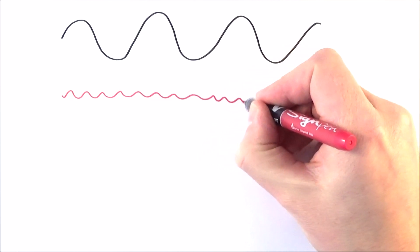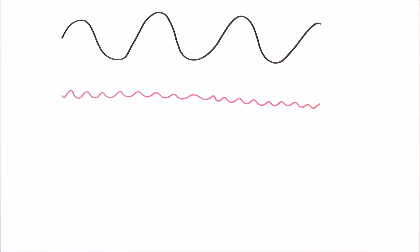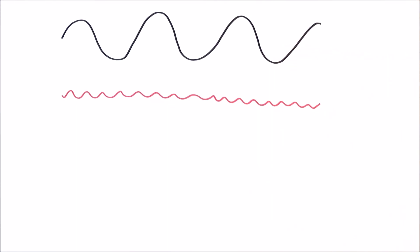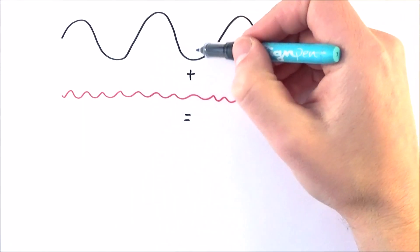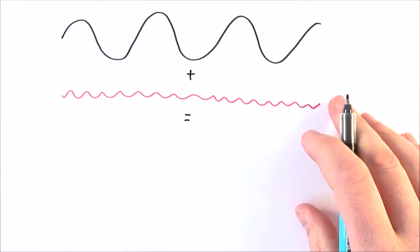perhaps this one has a smaller amplitude and a higher frequency. What we could look at is the sum of these two waves, and we can do that by adding their individual displacements at any time and looking at what that looks like.